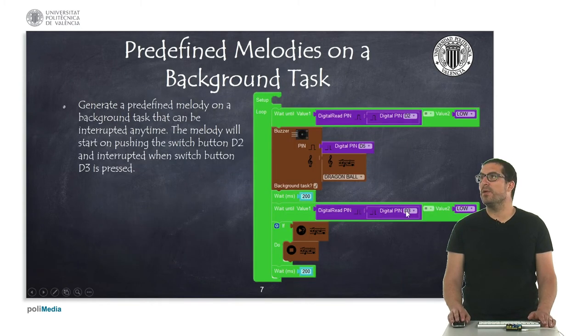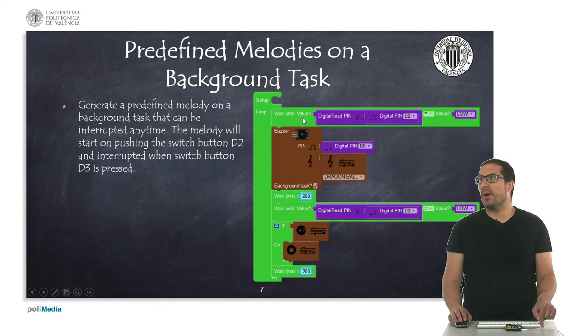In the third example, what I'm reproducing is a predefined melody in which, at the beginning, as we did before, I'm waiting for pushing the button connected to D2. Once I push the button, I start reproducing a melody, in this case, a Dragon Ball theme. As you can see here, I have checked the background task. That means that my loop actually runs.